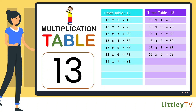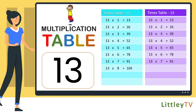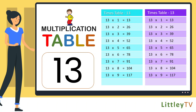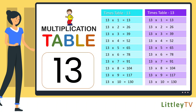13 sevens are 91, 13 eights are 104, 13 nines are 117, 13 tens are 130.